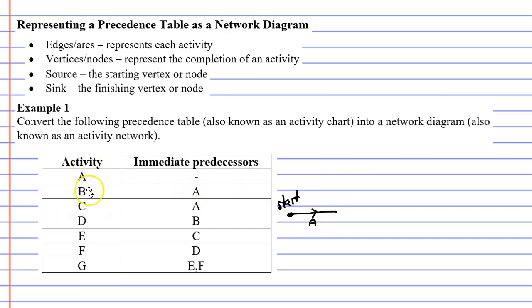Next, you'll notice that activities B and C come after activity A has completed. We can see that because activity A is the immediate predecessor for both activities B and C.